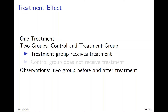Consider the simplest case: we have a single treatment and two different groups — a control group and a treatment group. The treatment group is the group affected by the event or treatment, and the control group is the group that doesn't have the treatment.